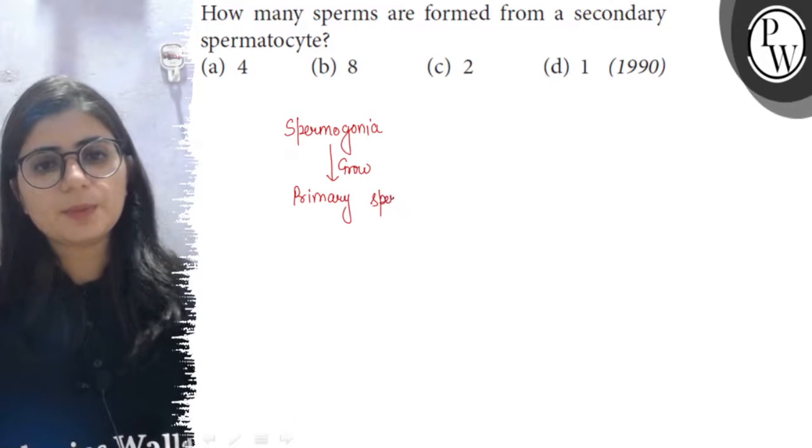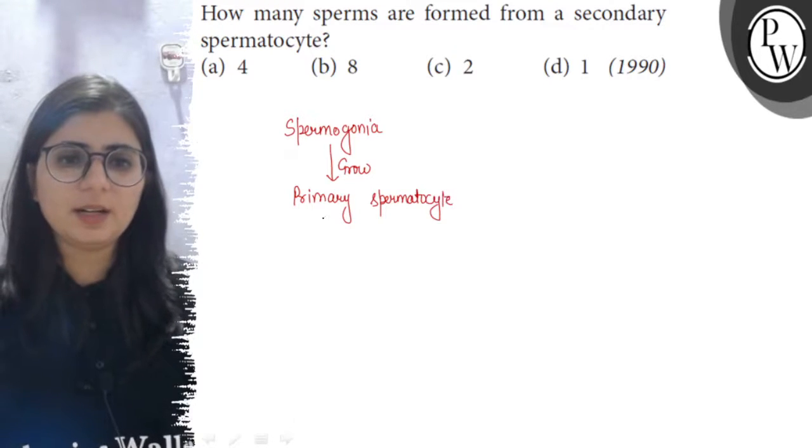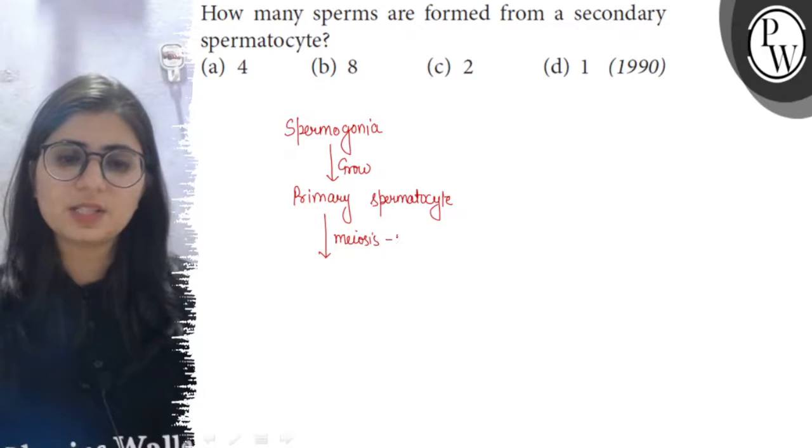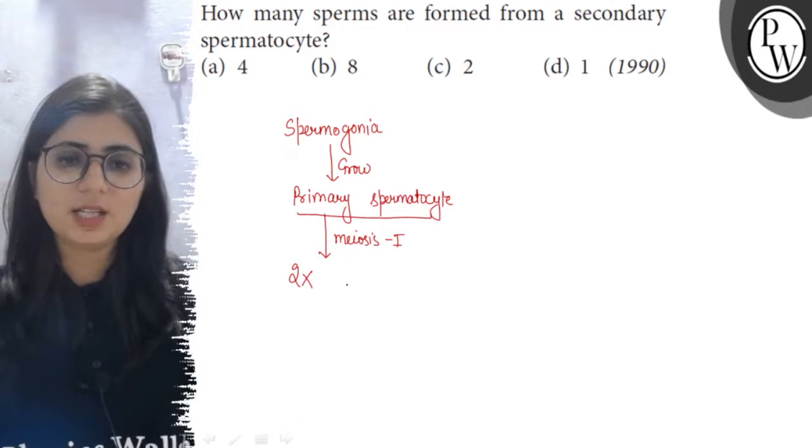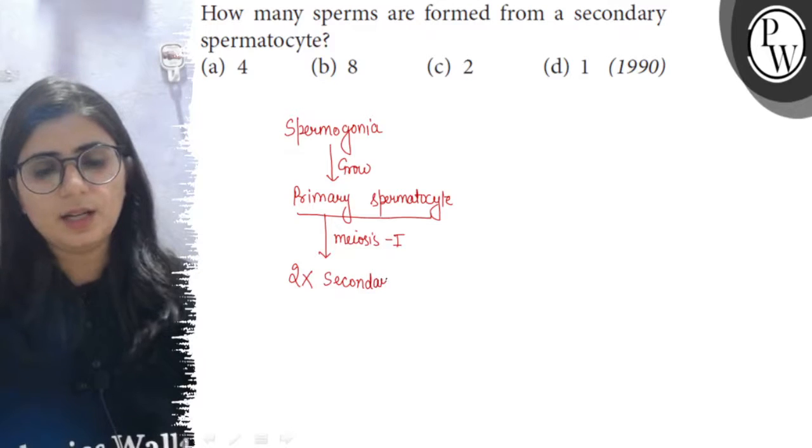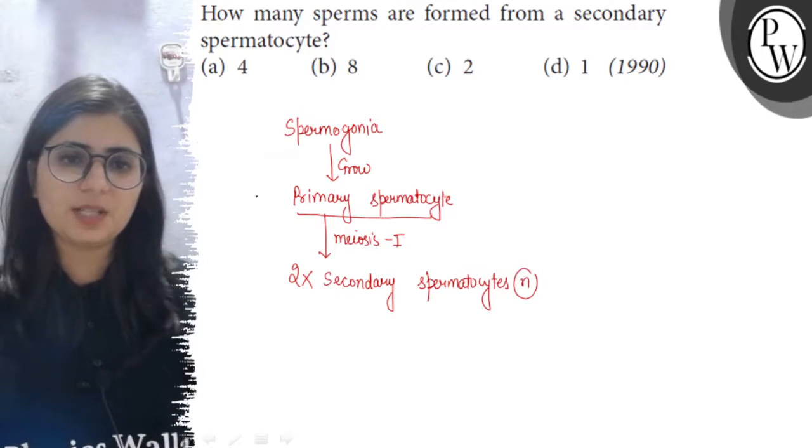Now the primary spermatocyte, each primary spermatocyte will undergo meiosis 1, and as we know that during meiosis 1 from each cell two cells will be produced. So each primary spermatocyte will form two haploid cells and these haploid cells are called the secondary spermatocytes. So two secondary spermatocytes from each primary spermatocyte.